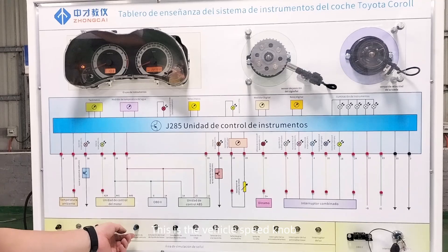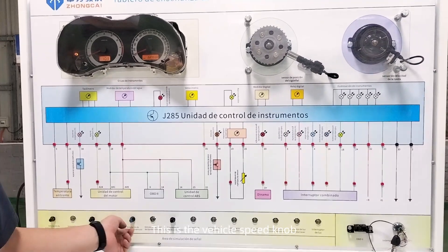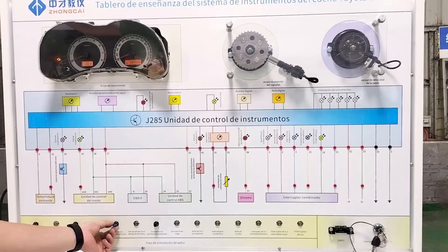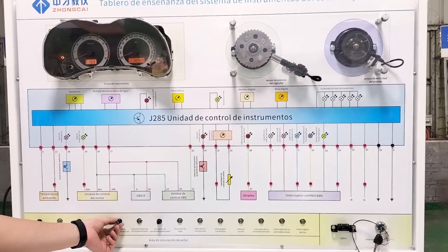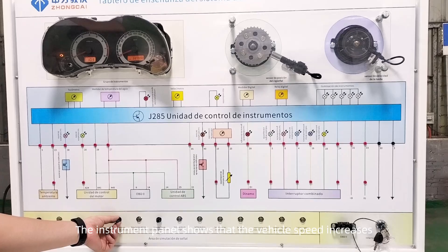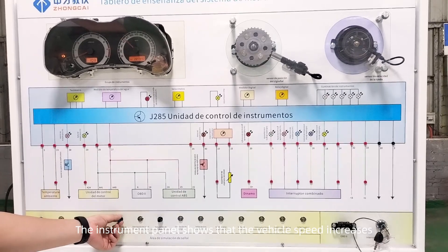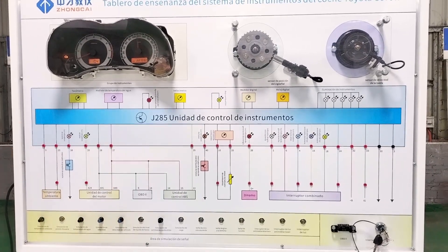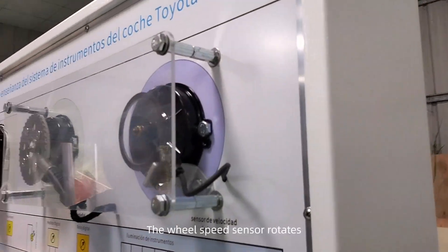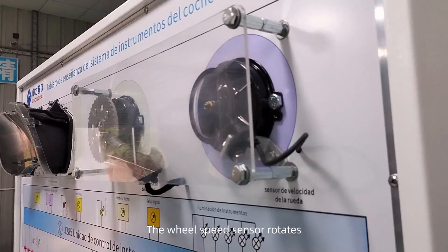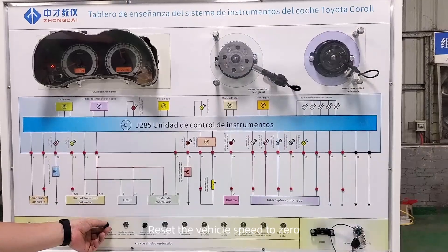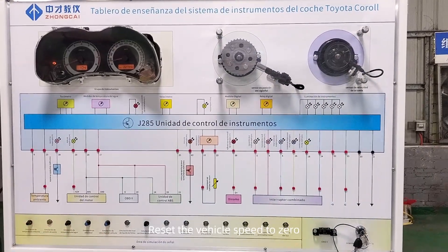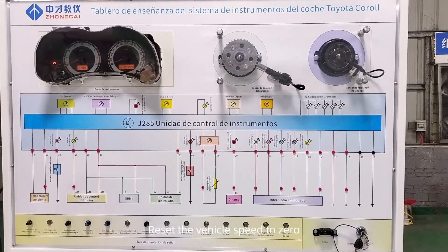This is the vehicle speed knob. Adjust the vehicle speed — the instrument panel shows that the vehicle speed increases and the wheel speed sensor rotates. Reset the vehicle speed to zero.